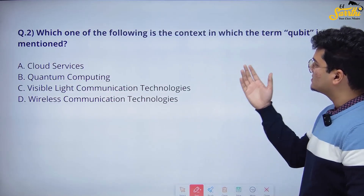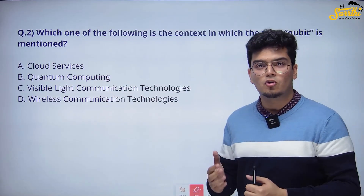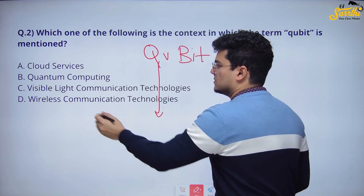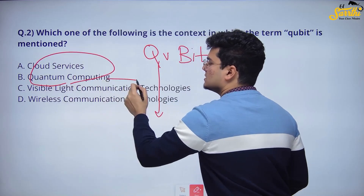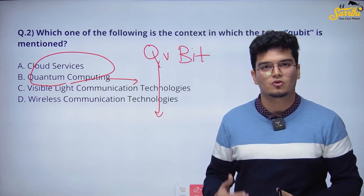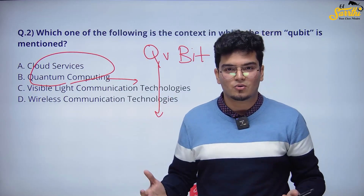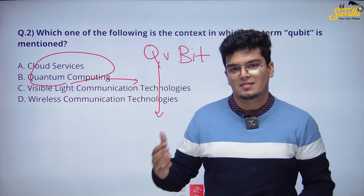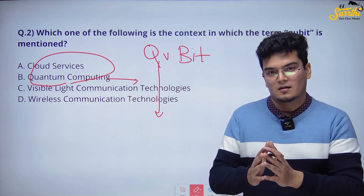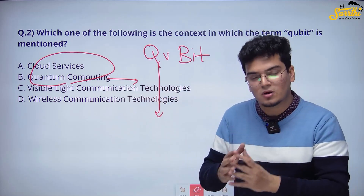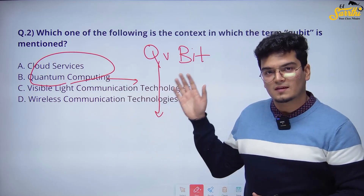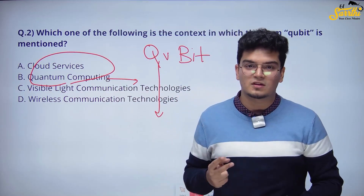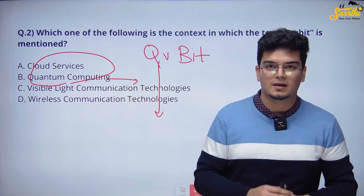Which one of the following is the context in which the term 'qubit' is mentioned? Qubit stands for quantum bit — quantum computing. This is a very up-and-coming area in which UPSC is going to ask more questions. But this is not related to current affairs at all — it might be a very simple question, but what is it telling you? Future questions will be very directed and will require conceptual clarity. Quantum computing and its two principles of superposition and entanglement are something that you need to read up on.